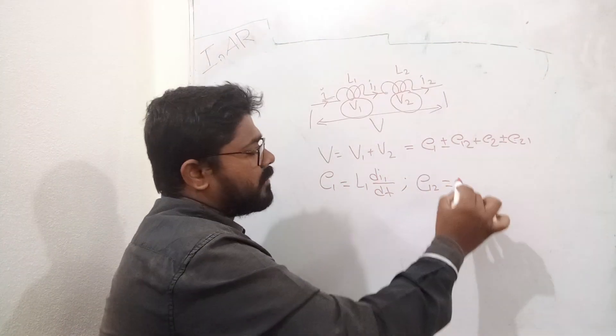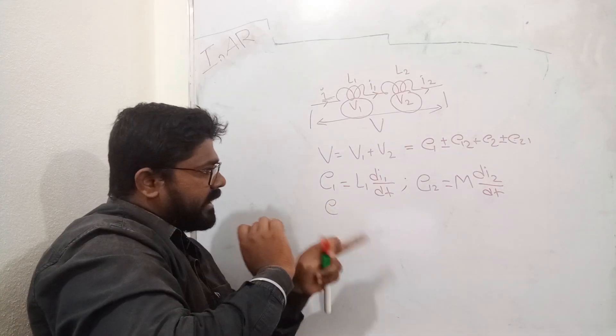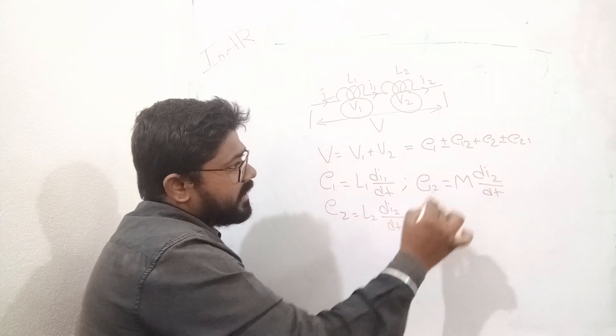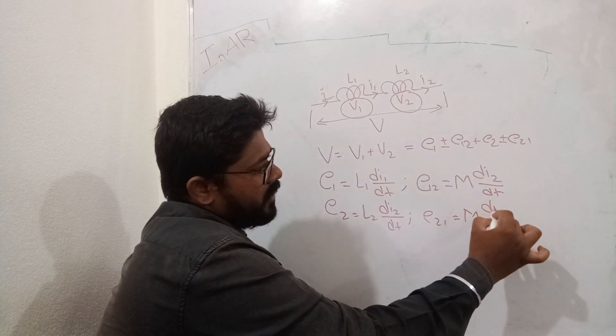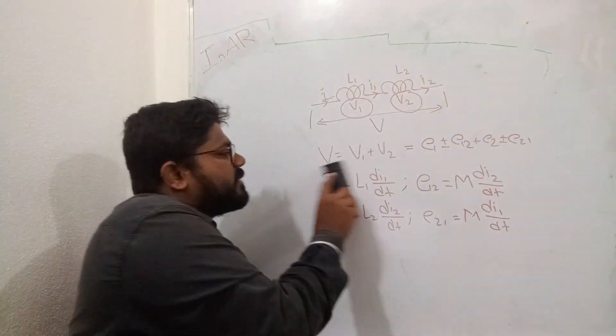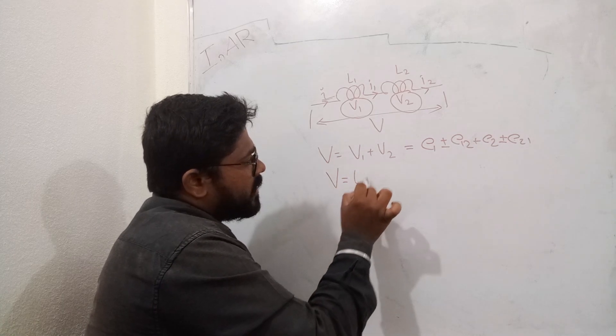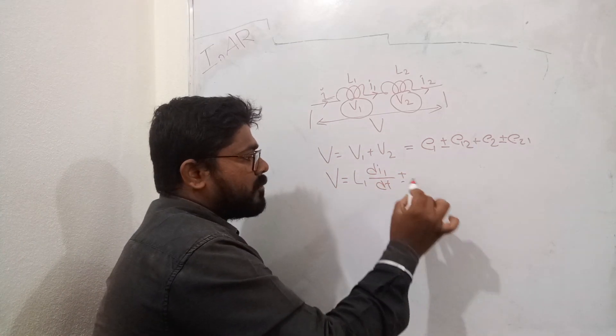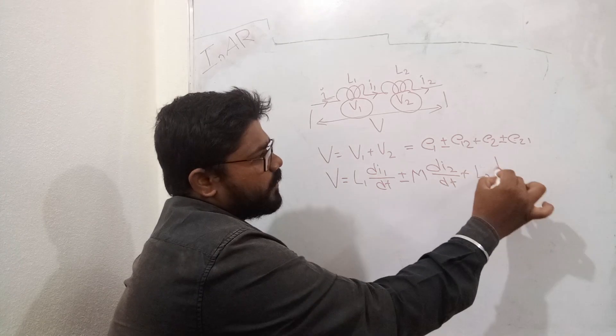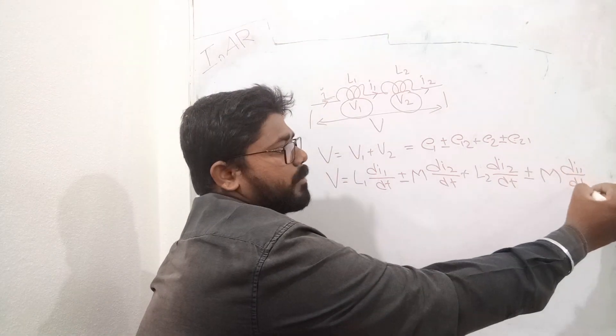We can apply the value of E12. So, E12 will be equal to M times di2 divided by dt. And this E21 will be equal to M times di1 by dt.